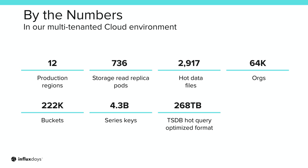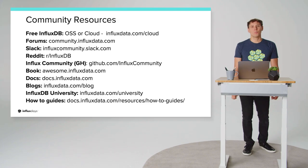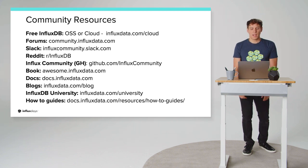Cloud is maintaining this level of redundancy in 12 production regions across roughly 740 storage pods, 3,000 hot data files, for 64,000 organizations and 222,000 buckets. This represents about 270 terabytes of hot TSM query data and 4.3 billion series keys — all maintained by a team of approximately 12 development and operational engineers. I hope this walkthrough has shown you how we have a robust backup system that will keep you from losing data, and if you're not a customer yet, helps convince you that cloud is the right place for your time series data. Find me in the InfluxDB community Slack for questions. Thank you for your time.